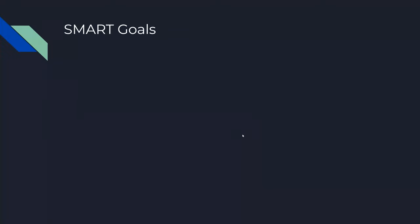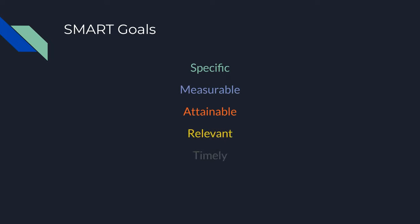One way to help figure out your goals is to look at what are called SMART goals. SMART stands for Specific, Measurable, Attainable, Relevant, and Timely — or time-bound. So: Specific, Measurable, Attainable, Relevant, and Timely.